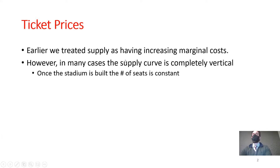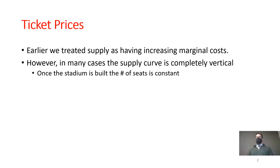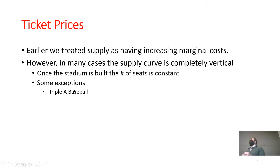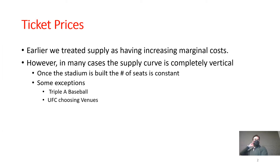So we think about the supply curve in the ticket market as actually vertical — a vertical line at whatever our stadium capacity is. Now, demand for tickets will behave just like demand for any other product, nothing different there. We'll talk about a few exceptions: AAA baseball teams will rope off parts of the stadium they don't sell tickets to, so they can decrease their capacity. But for the most part, there is some maximum capacity at every stadium and arena.